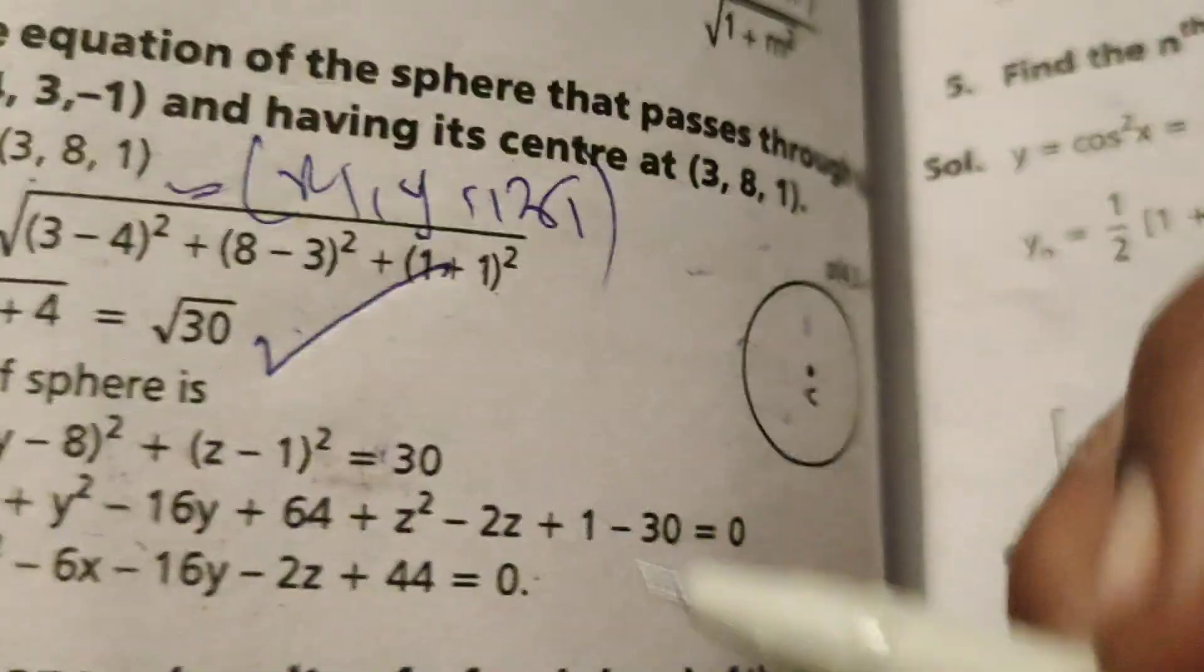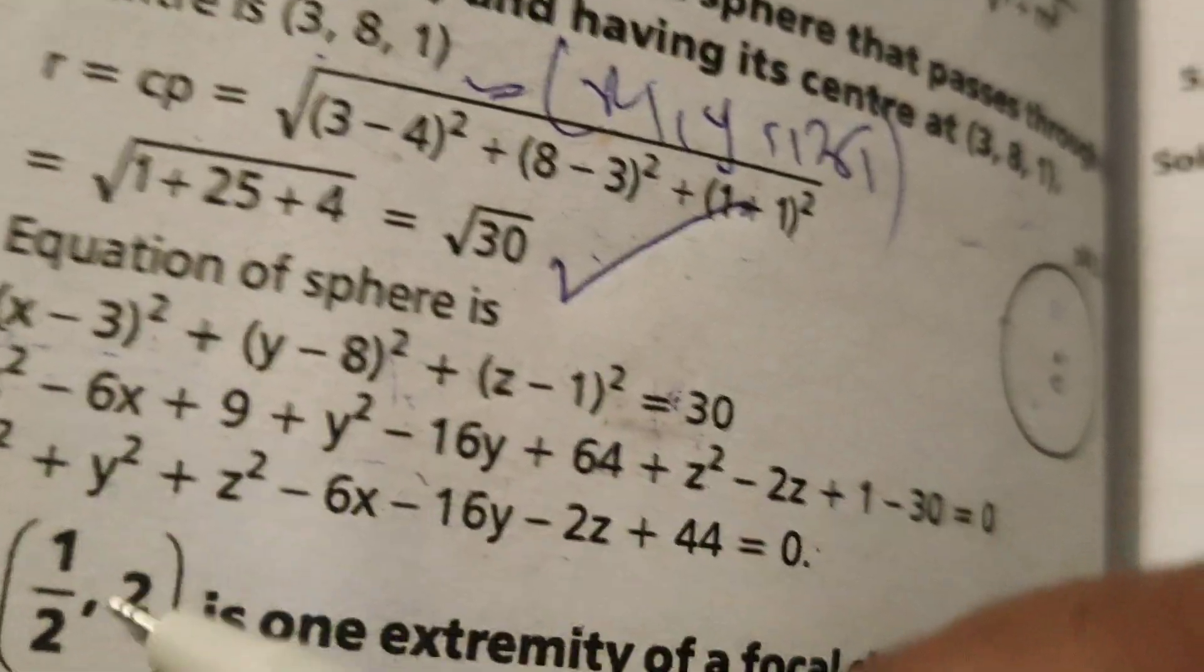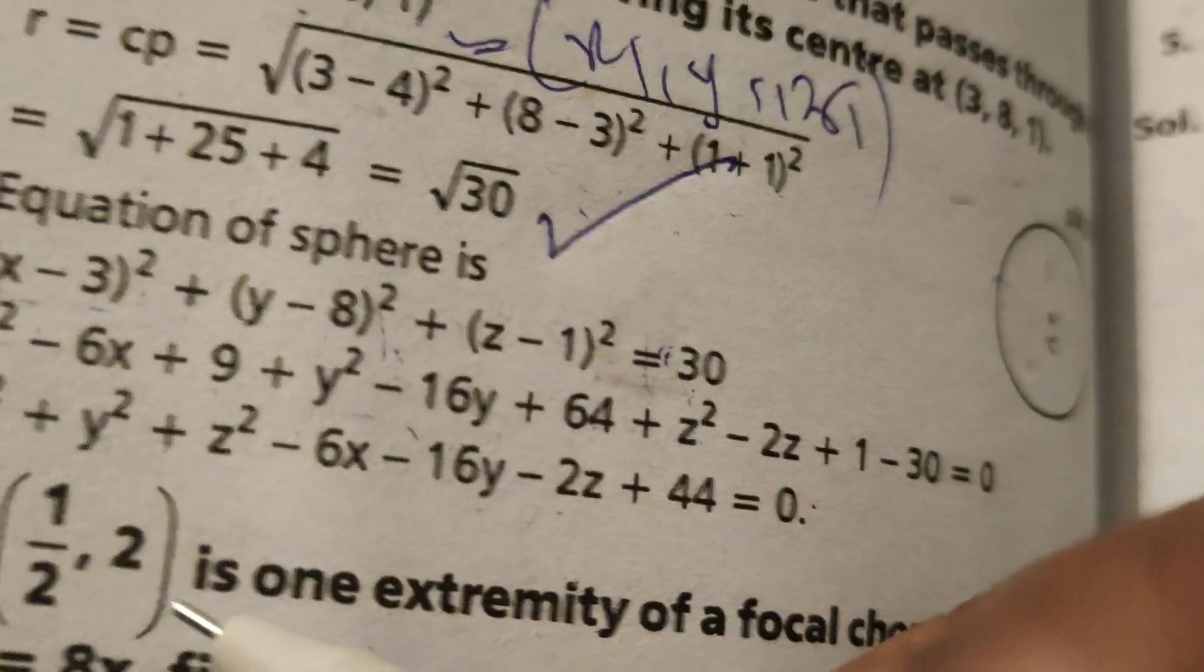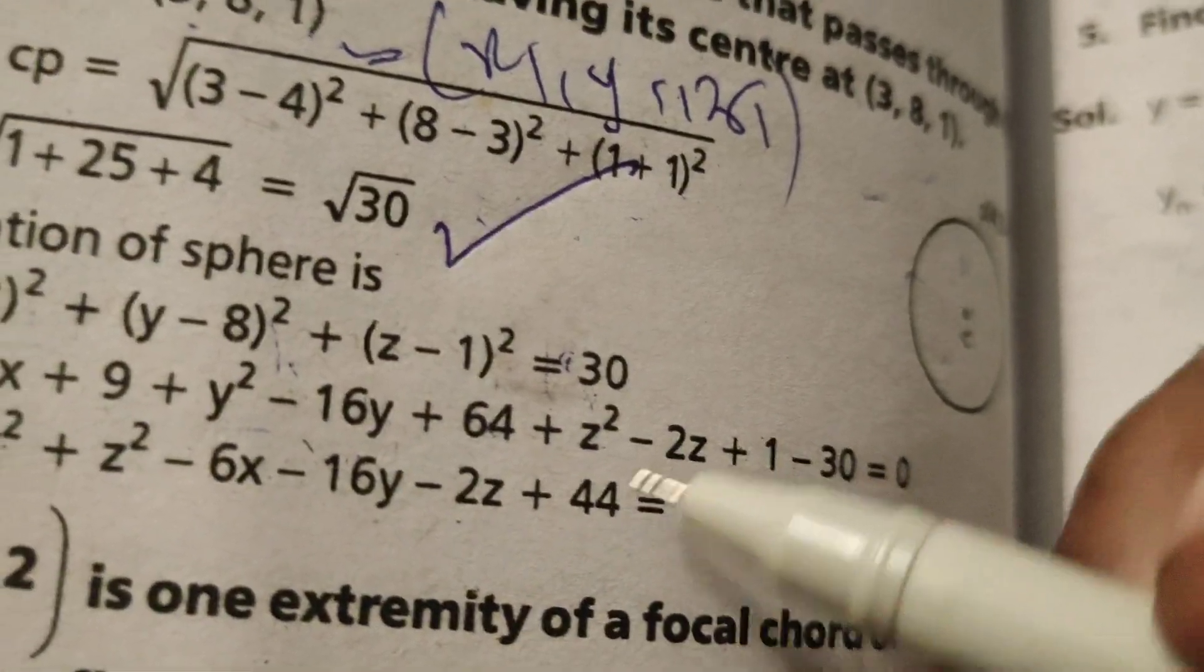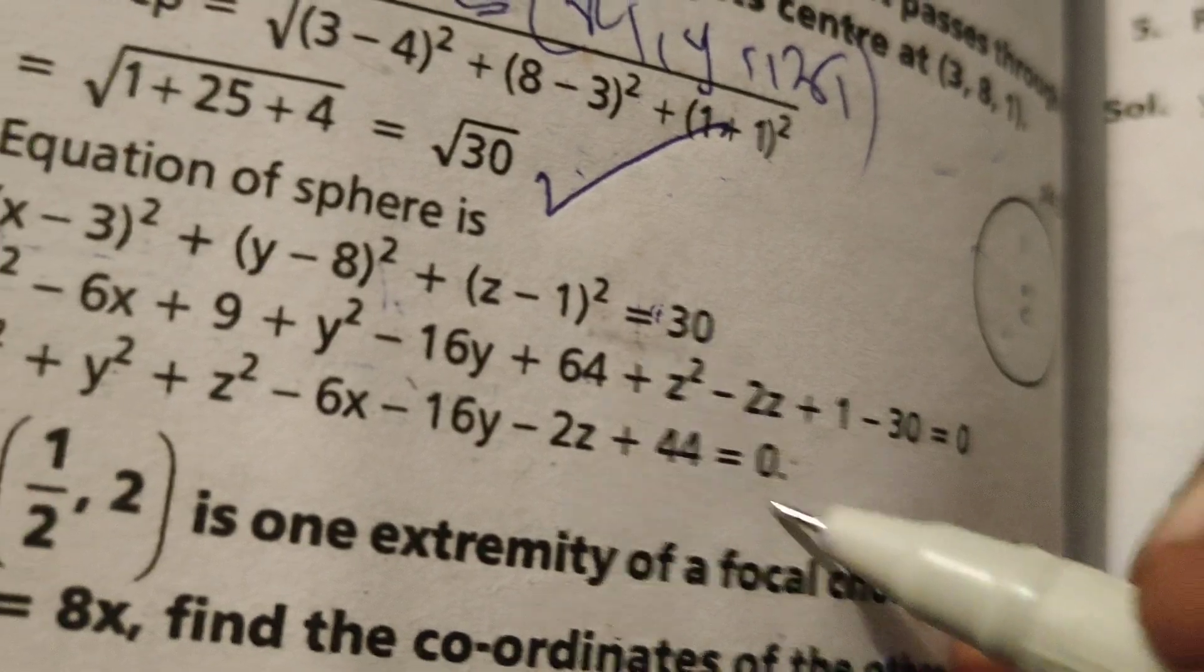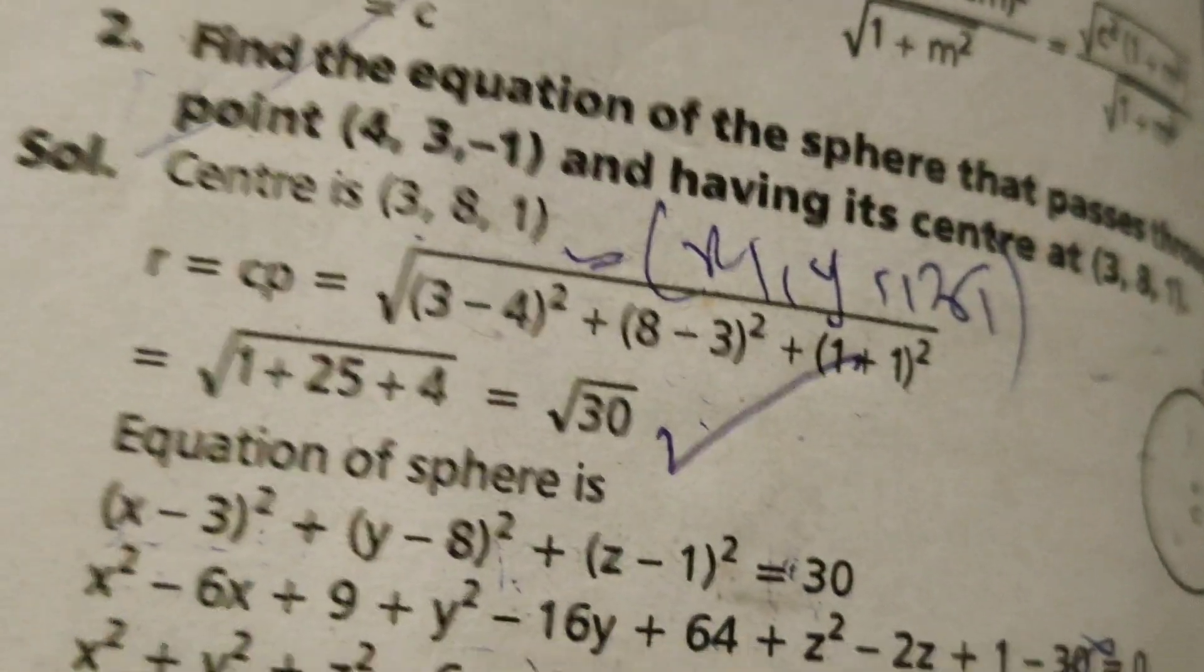Transpose to get minus 30 equals 0. Therefore, x² + y² + z² - 6x - 16y - 2z + 44 = 0. This is the solution to this problem. Thank you.